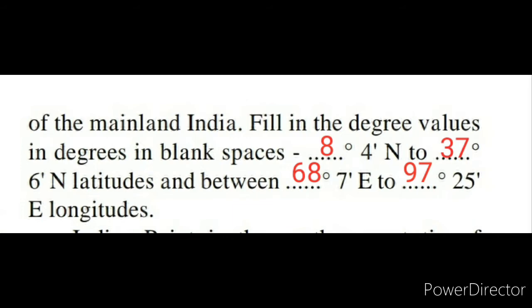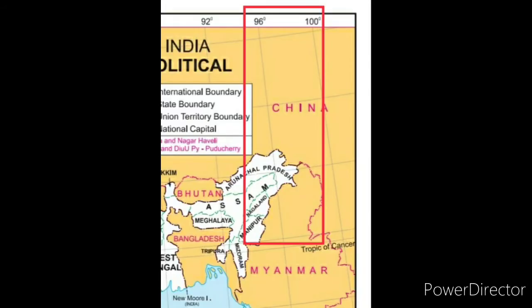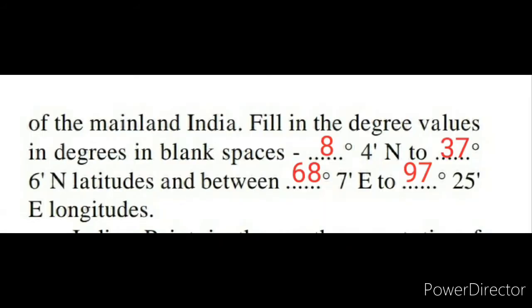Now talking about longitude: India is in the eastern hemisphere, so starting from Gujarat at 68 degrees 7 minutes east, going eastward to Arunachal Pradesh, which is the easternmost state. So India's longitude extent goes from 68 degrees 7 minutes east to approximately 97 degrees east.